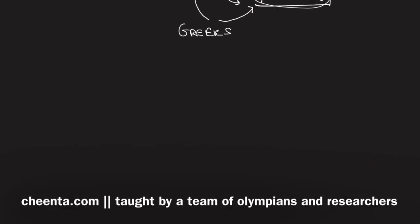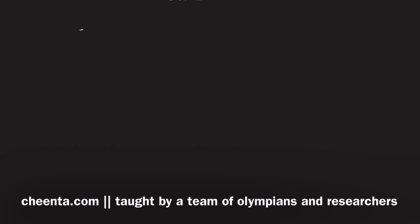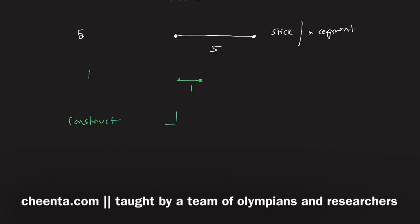Let's see how. Suppose you have the number five — for a geometer, this will be a length of five, maybe a stick or a segment of length five. The question is: if you have another length of one, can you construct one over five?